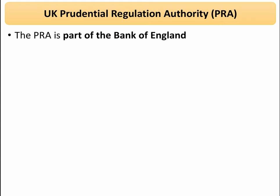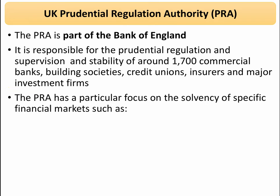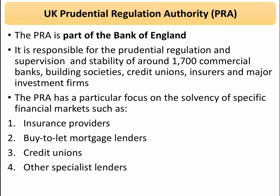The Prudential Regulation Authority, or PRA, is also part of the Bank of England. They look at the prudential regulation and supervision of commercial banks, building societies, credit unions, insurers, and major investment firms — making sure specific financial markets are working optimally. For example, do insurance companies have sufficient reserves in times of crisis? They also oversee specialist areas such as buy-to-let mortgage lenders, credit unions organised at local levels, and lenders with specialist approaches to business lending. The PRA looks at individual firms and individual markets.